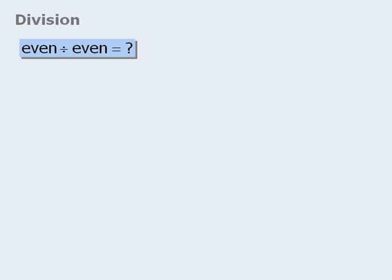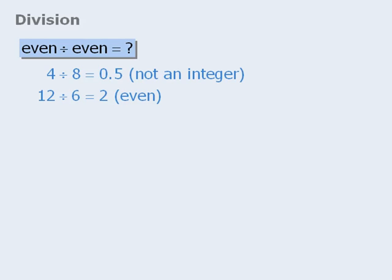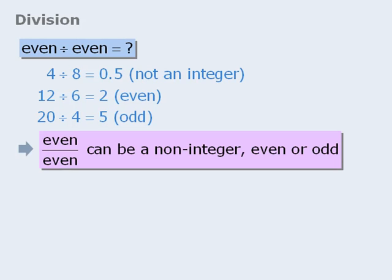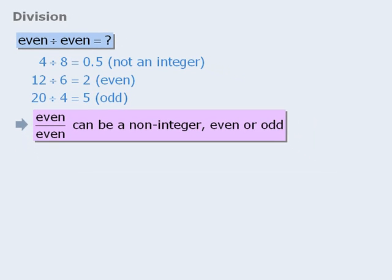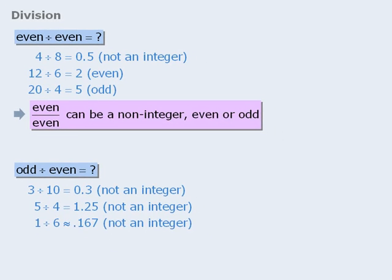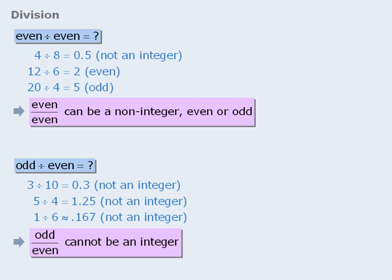Now let's examine what happens when we divide integers. The rules for division are not nearly as concise as they are for addition, subtraction, and multiplication. When dividing an even number by another even number, the result can be a non-integer, an even number, or an odd number — for example, 4 divided by 8 is 0.5, 12 divided by 6 is 2, and 20 divided by 4 is 5. When dividing an odd number by an even number, the quotient can never be an integer.